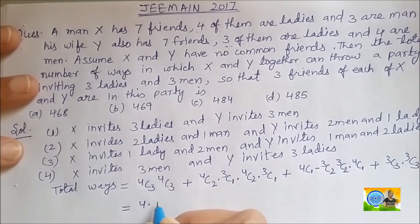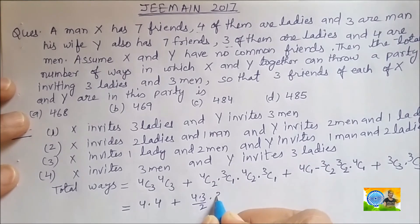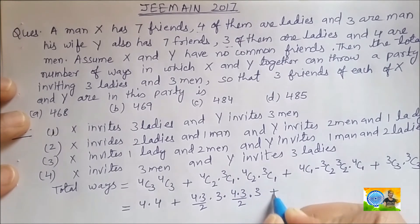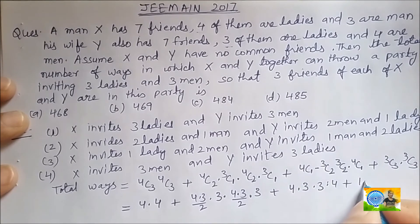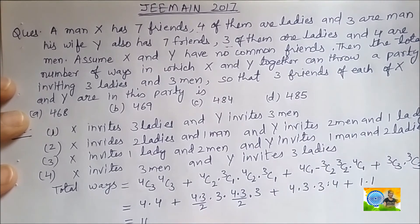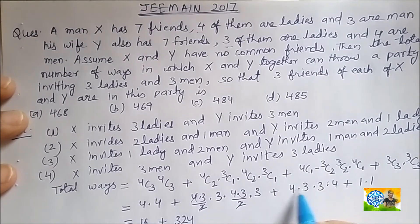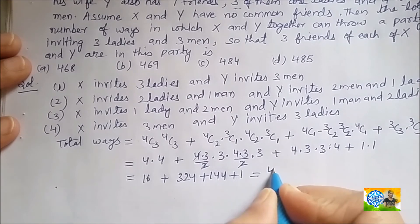Now let us solve this. C(4,3) = 4, so Case 1 gives 4 × 4 = 16. C(4,2) = 6 and C(3,1) = 3, so Case 2 gives 6 × 3 × 6 × 3 = 324. C(4,1) = 4 and C(3,2) = 3, so Case 3 gives 4 × 3 × 3 × 4 = 144. Case 4 gives C(3,3) × C(3,3) = 1 × 1 = 1. Adding: 16 + 324 + 144 + 1 = 485.